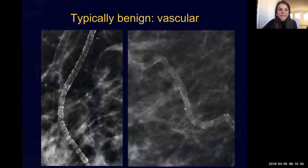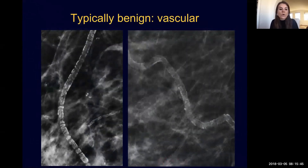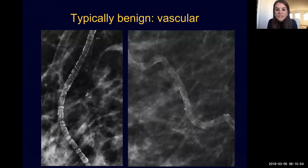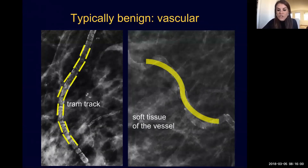Just like in other parts of the body, we frequently see benign vascular calcifications in the breast. The image on the left nicely shows the end process of a vessel calcifying, where we see parallel lines of calcifications coating the vessel — a tram track appearance. The image on the right is a less densely calcified vessel; we don't see the tram track appearance, but we do see the soft tissue density of the vessel. Both the tram track sign and seeing the soft tissue of the vessel are characteristically benign — we do not want to biopsy these calcifications.